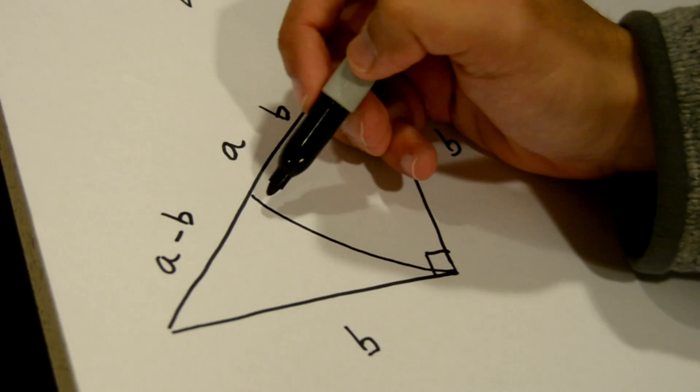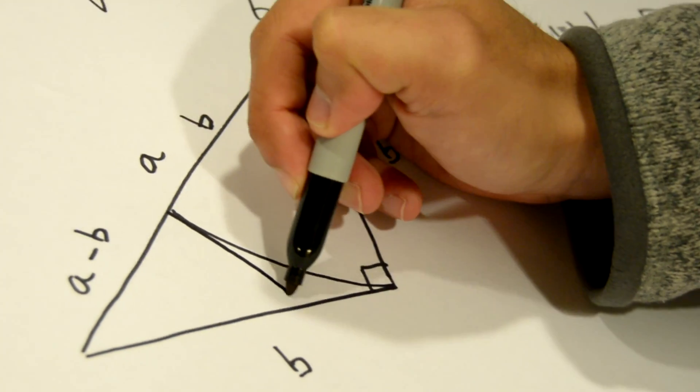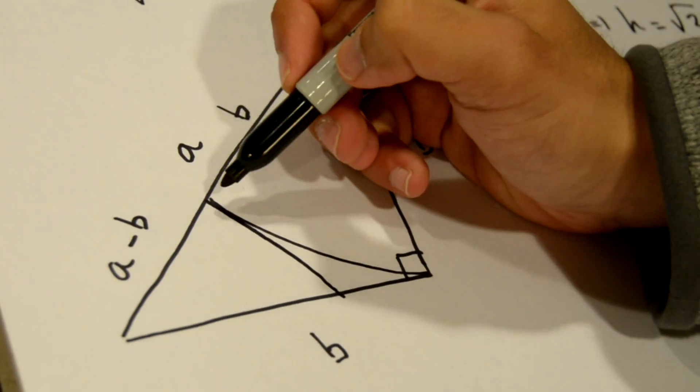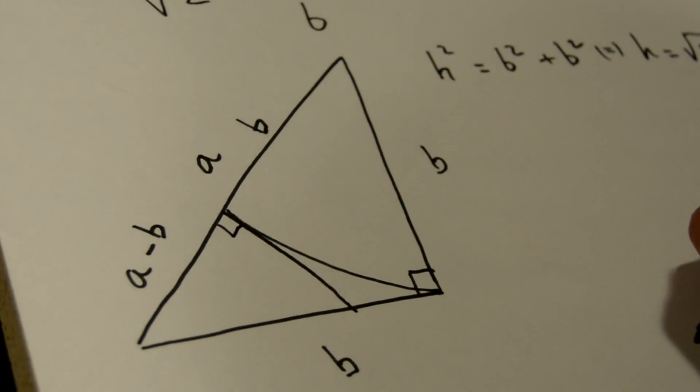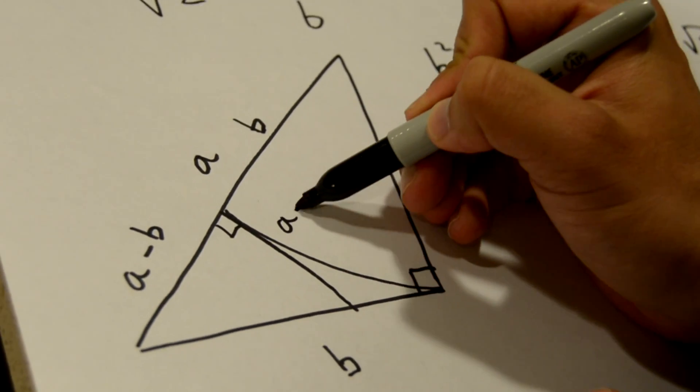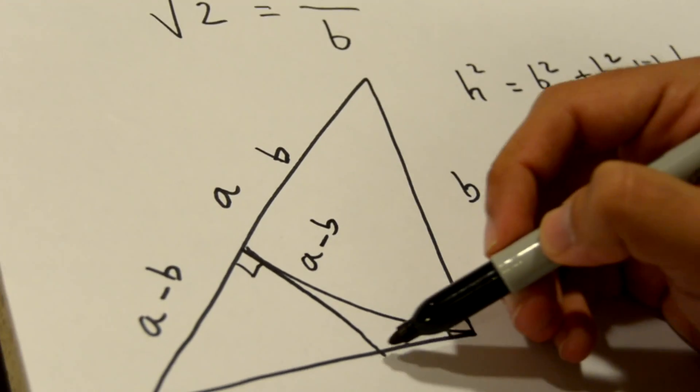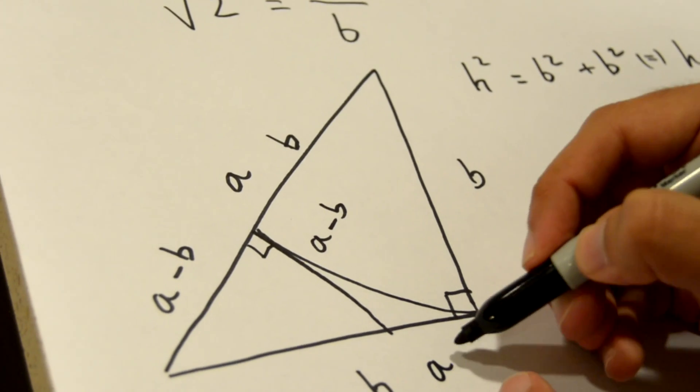Now if we draw a perpendicular line from here to here, we see that these are right angles. The length of this side is also a minus b, and the length of this side is also a minus b.